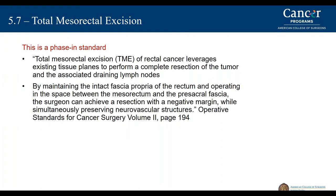Standard 5.7 involves the management of rectal cancer patients and includes the concept of a total mesorectal excision, and is also a phase-in standard. A total mesorectal excision is the gold standard of operative care for rectal cancer patients and involves removing the appropriate tissue plane, providing a complete resection, as well as removing lymph nodes for resecting rectal cancer.